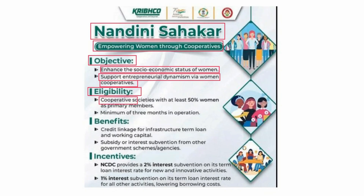The eligibility criteria for the scheme require cooperative societies to have at least 50% women as primary members. Additionally, the cooperative society must have been in operation for a minimum of three months to be eligible for the Nandini Sahkar scheme.